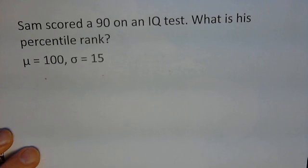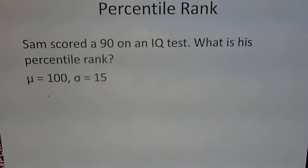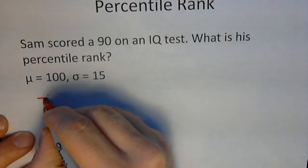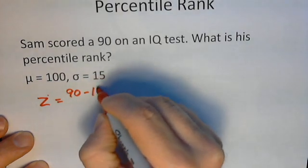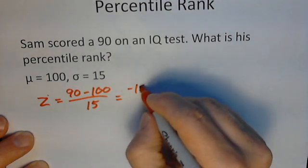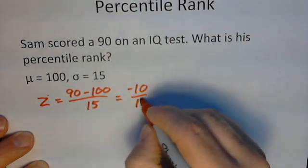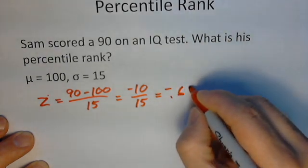Another example: Sam scored a 90 on his IQ test. As you may know, most IQ tests are normed — or transformed — for a mean of 100 and a standard deviation of 15. So again, we figure out his z-score: 90 minus 100, divided by 15, which gives us negative 10 divided by 15. That's negative two-thirds, which would be negative 0.666.